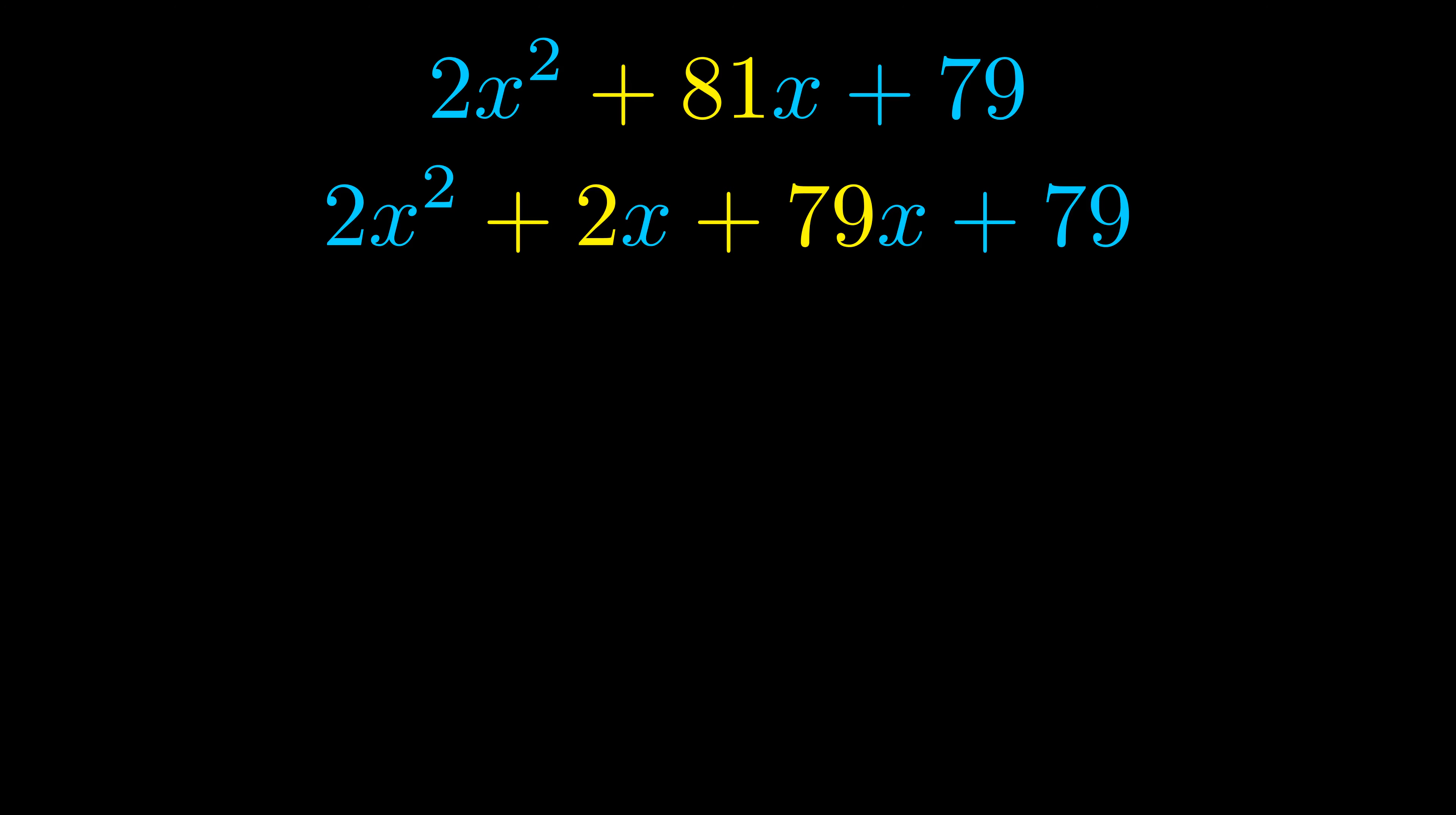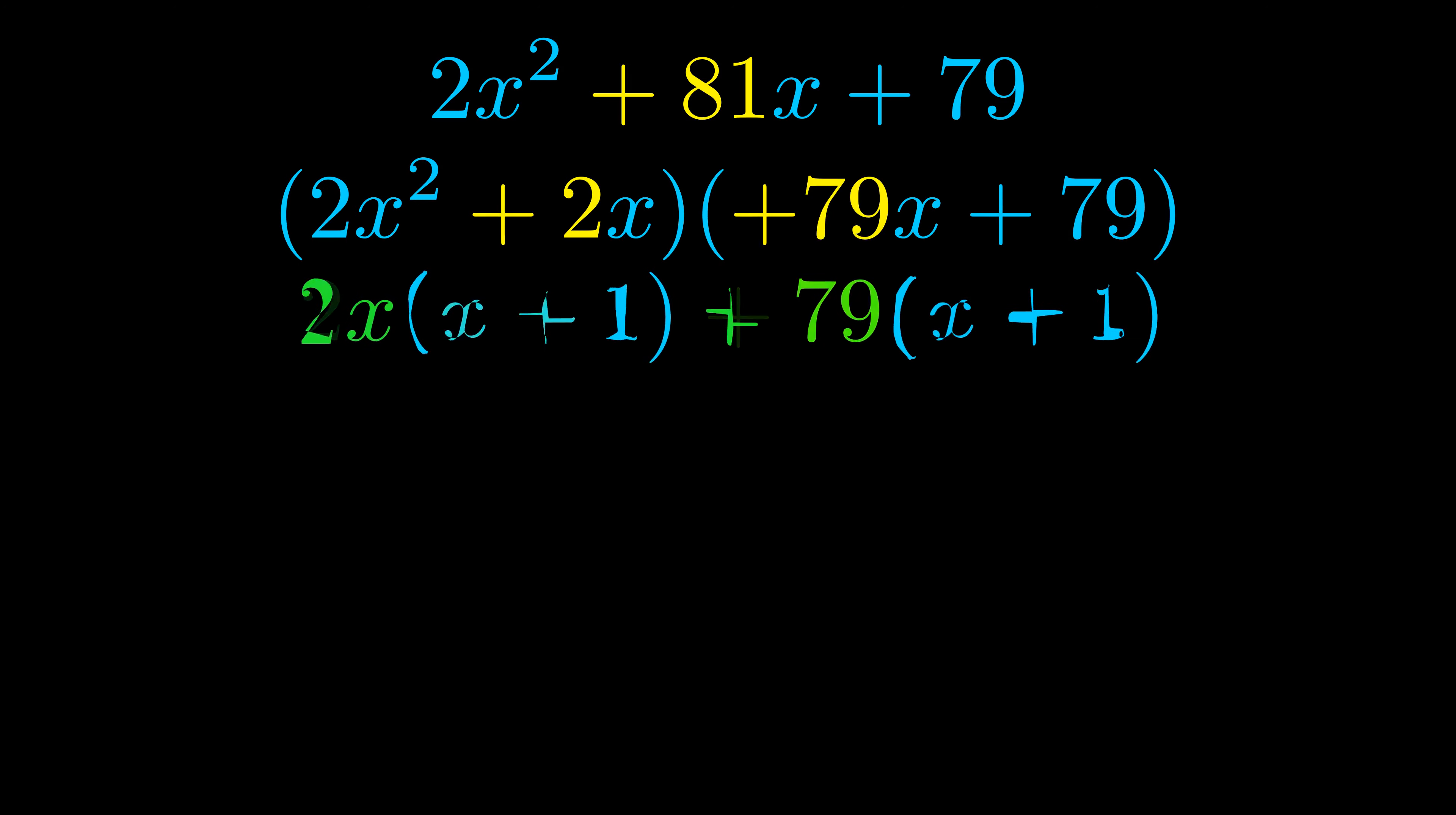Once we've done this we go ahead and put parentheses around the first term and the last term. And we do that so that we can take the greatest common factor out of both terms. We can see the greatest common factor is now outside in green.